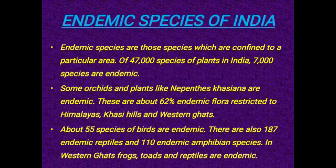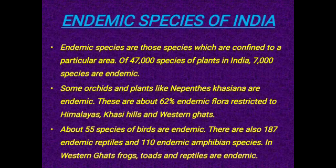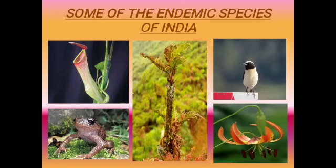Next, endemic species of India. Endemic species are those confined to a particular area. Of 47,000 species of plants in India, 7,000 species are endemic. Some orchids and plants like Nepenthes cassiana are endemic. About 62% of endemic flora is restricted to the Himalayas, Khasi Hills, and Western Ghats. About 55 species of birds are endemic, along with 187 endemic reptiles and 110 endemic amphibian species. In the Western Ghats, frogs, toads, and reptiles are also endemic. These are some endemic species of India, with the top-left image representing Nepenthes cassiana.